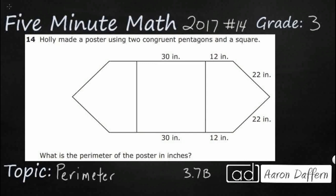Hello and welcome to 5-Minute Math. Today we are looking at the third grade concept of perimeter. This is standard 3.7b in the great state of Texas and we are using item number 14 off the 2017 released STAAR test.